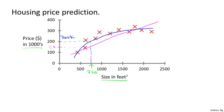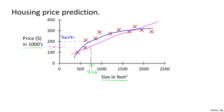So this is an example of a supervised learning algorithm. And the term supervised learning refers to the fact that we gave the algorithm a dataset in which the quote right answers were given. That is, we gave it a dataset of houses in which for every example in this dataset, we told it what is the right price, or what is the actual price that that house sold for. And the task of the algorithm was to just produce more of these right answers, such as for this new house that your friend may be trying to sell.